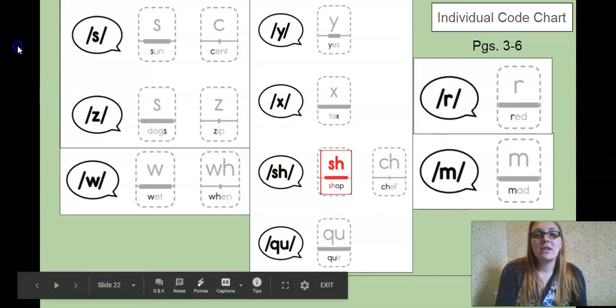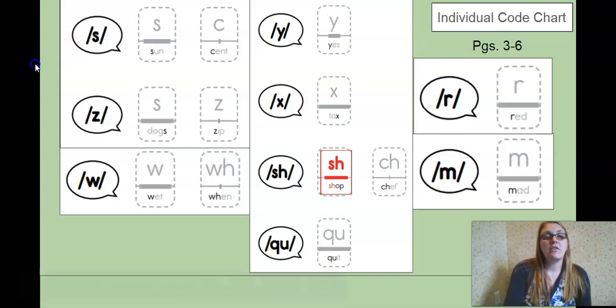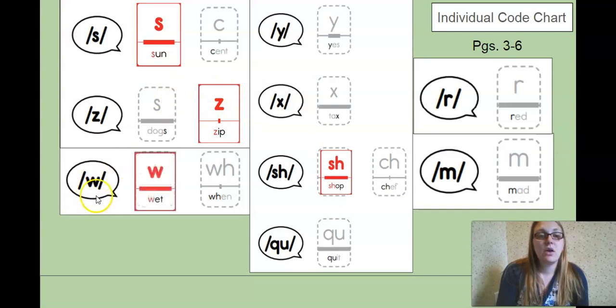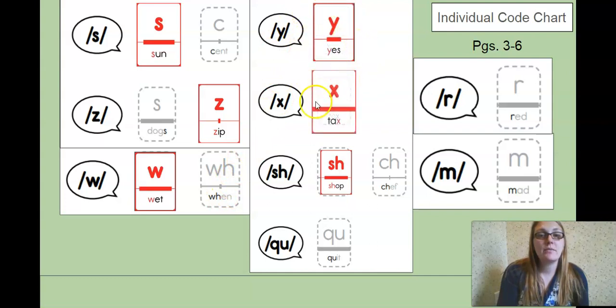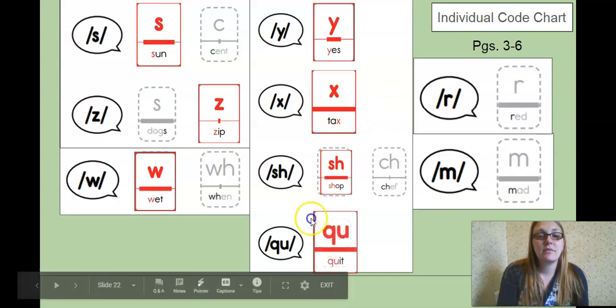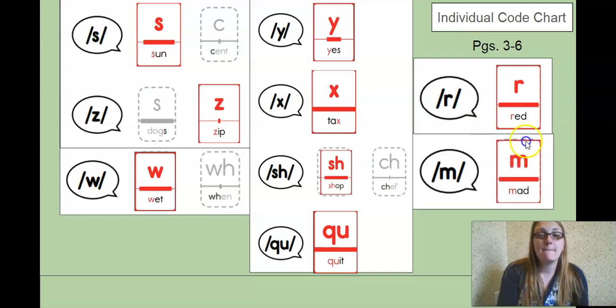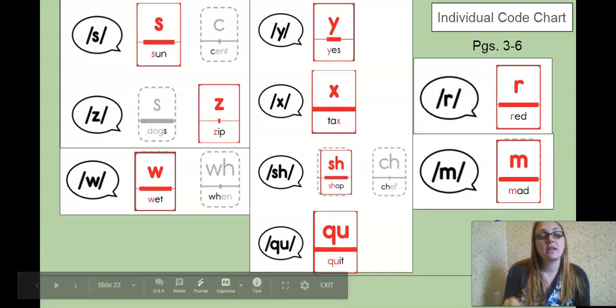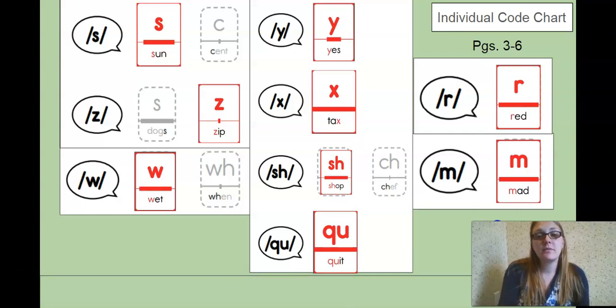Okay, now we're on to the individual code chart page. Here are all of the letter sounds and spellings we did today. S, common spelling is S. Z, Z, W, W, Y, Y, X, X, Q, Q U, R, R, and M, mad, M. That is in your individual code chart on pages three through six. Continue to add to the chart you've already started with red.